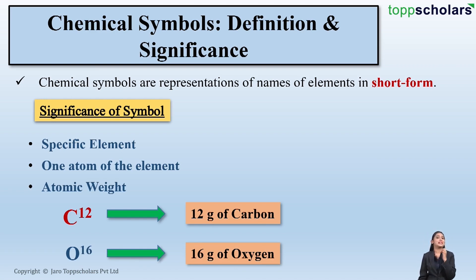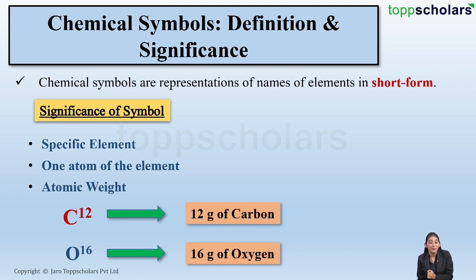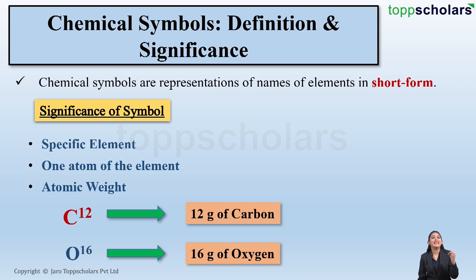Chemical symbols help us to represent the specific element, one atom of the element, and the atomic weight.